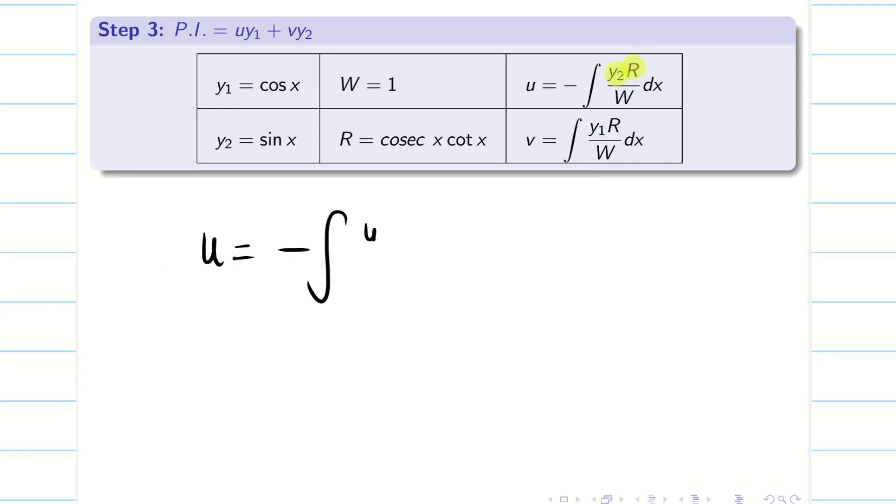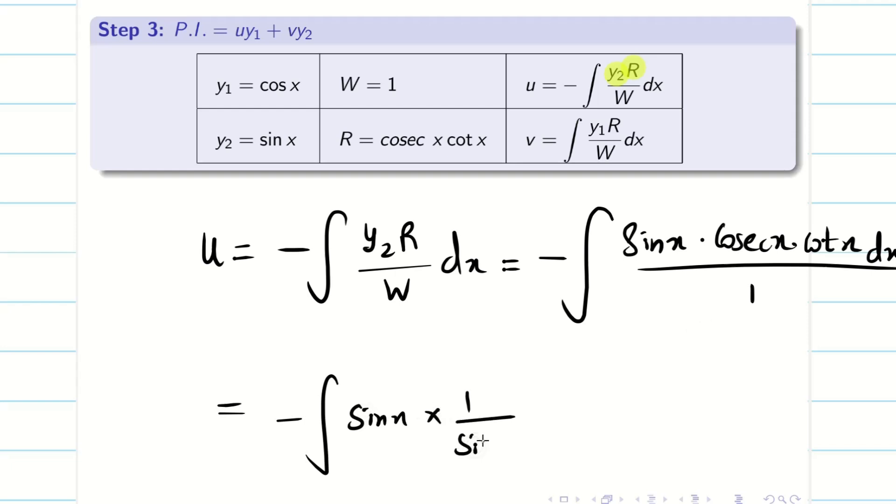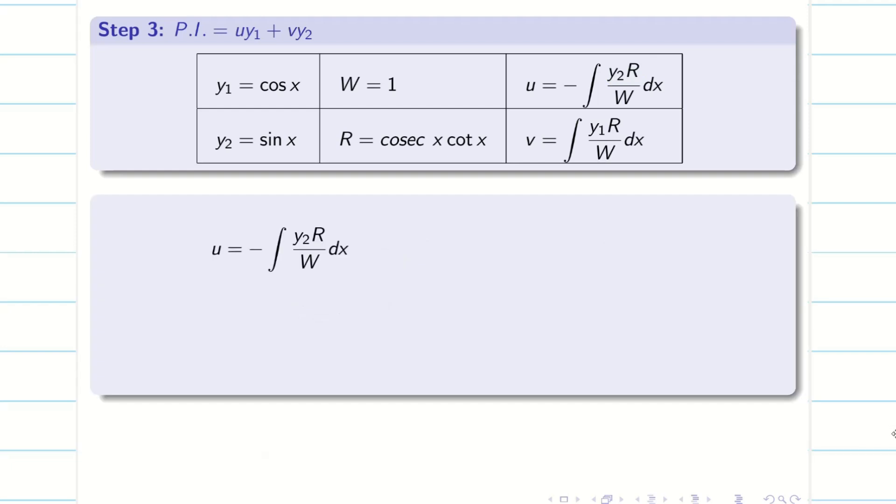The formula connecting y₂ and R is u. So u = -∫(y₂R/W)dx. My y₂ is sin x, my R is cosecant x cot x divided by W is 1 dx. Now what will happen? sin x · cosecant is sin x · (1/sin x). Both will get cancelled. We will be having cot x dx. So minus cot can be written as cos x by sin x dx. When I substitute, sine by sine gets cancelled. We will be having integral cot x.